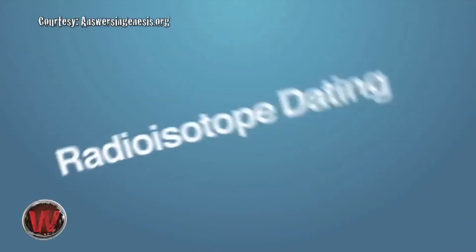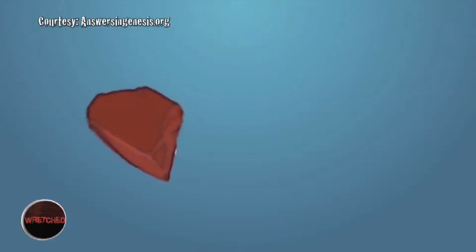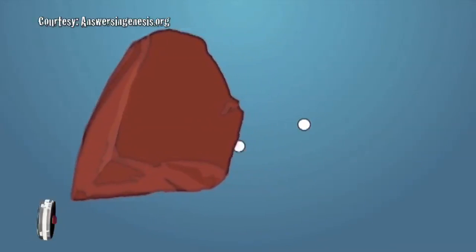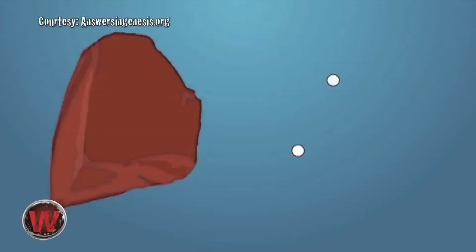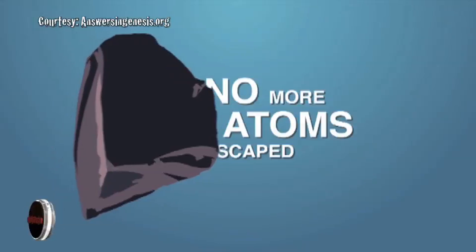Radioisotope dating is commonly used to date igneous rocks, rocks which formed when hot molten material cooled and solidified. The dating clock started when the rock cooled. During the molten state, it is assumed that the intense heat forced any gaseous daughter elements to escape. It is assumed that once the rock cooled, no more atoms escaped and any daughter element now found in the rock is a result of radioactive decay since that rock formed.